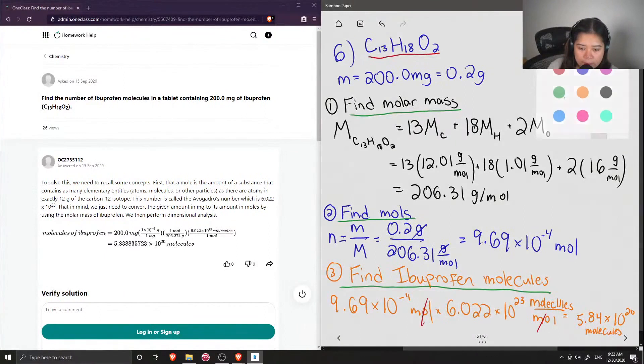And give us a final answer of 5.84 times 10 to the 20 molecules. Let me box it.